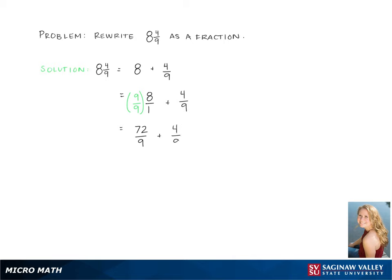Now that the denominators are the same, we can add across the top. 72 plus 4 is 76, and the denominator stays the same, giving us a final answer of 76 over 9.